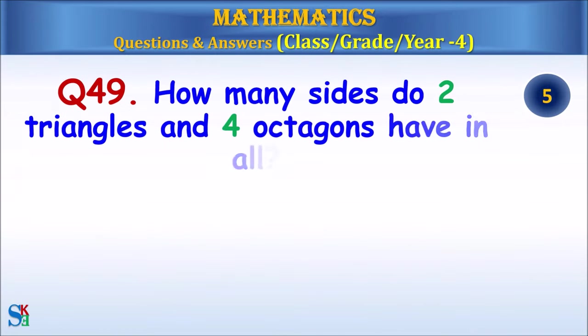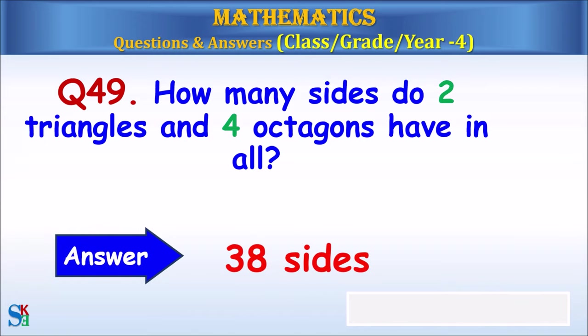Question 49: How many sides do two triangles and four octagons have in all? The answer is 38 sides.